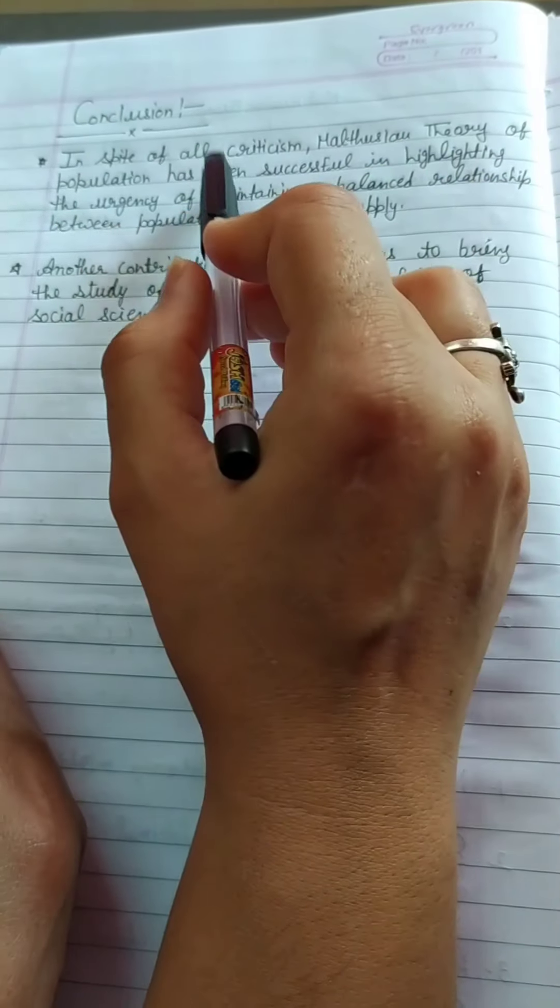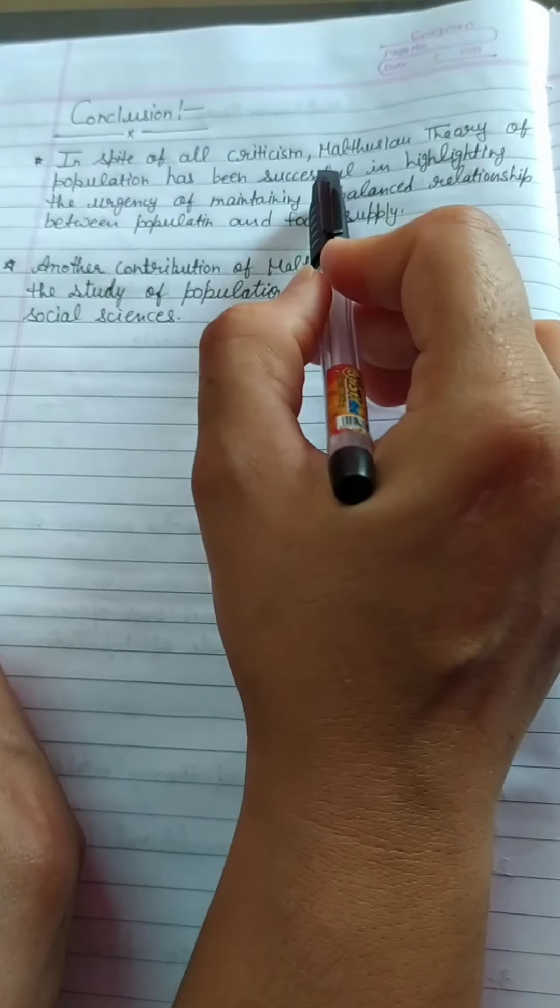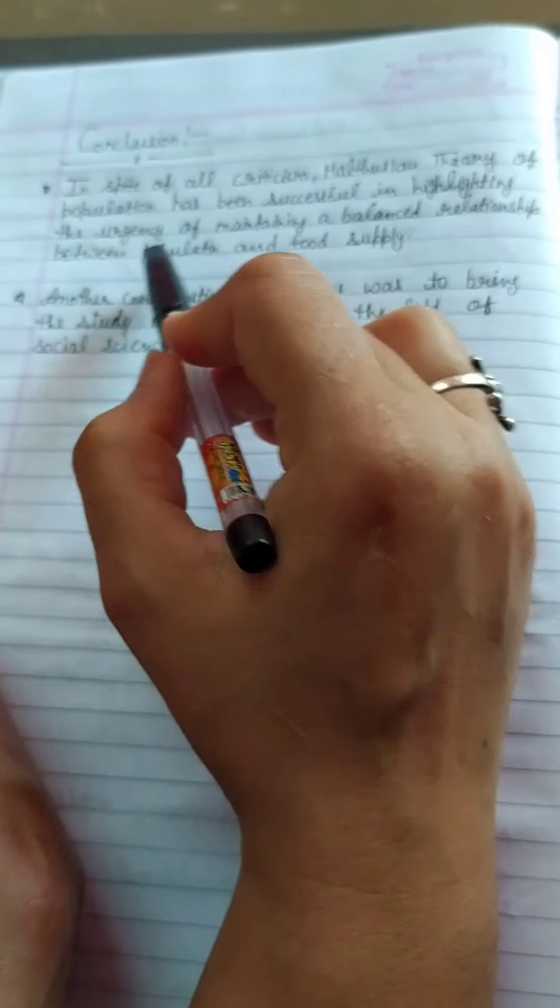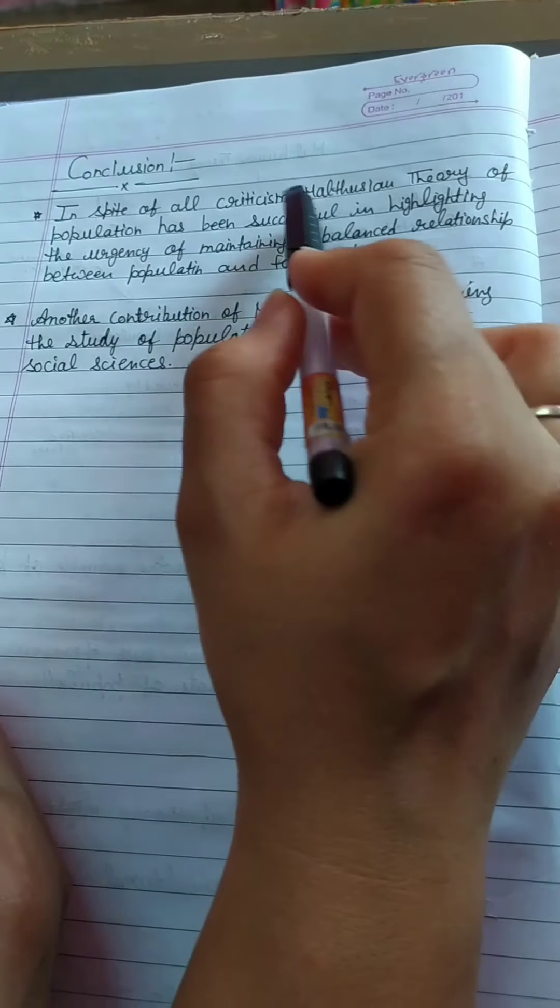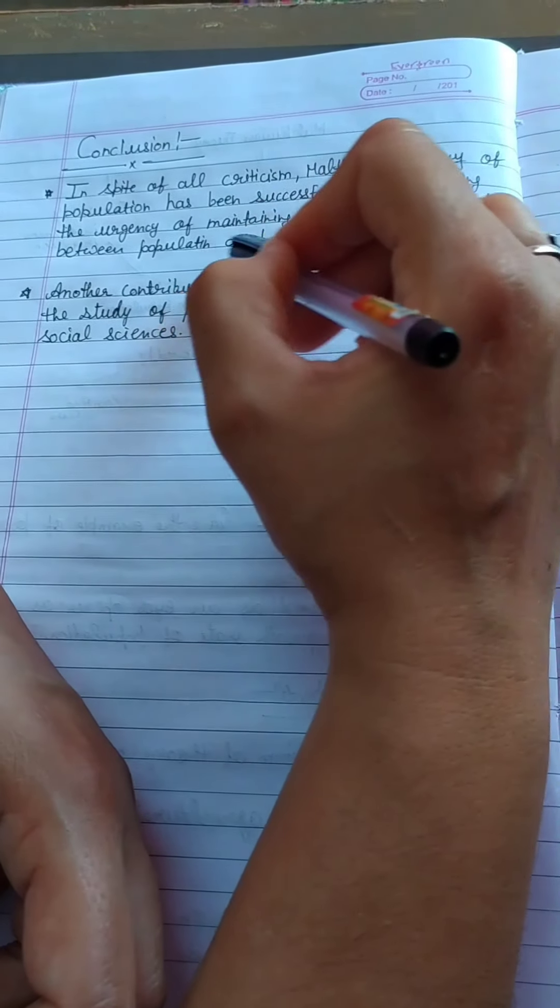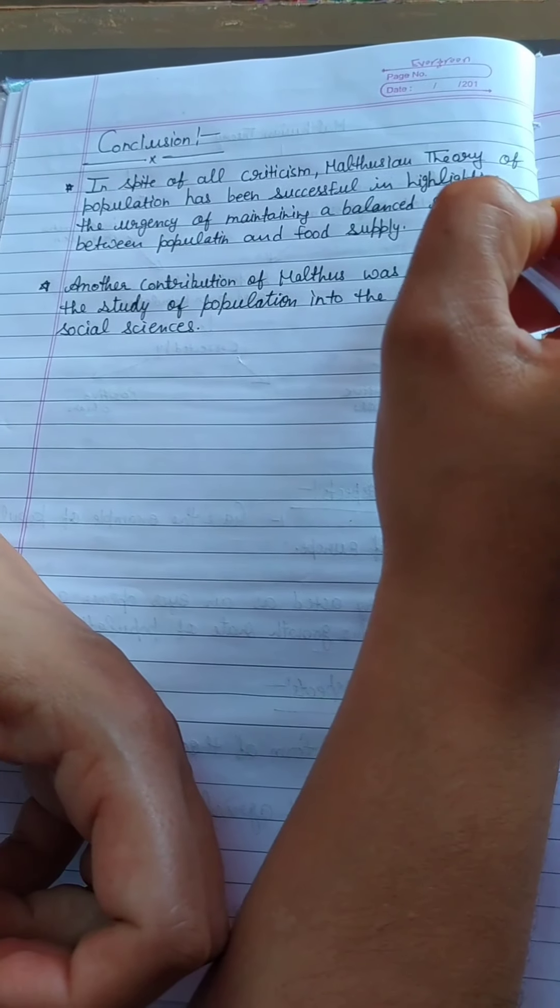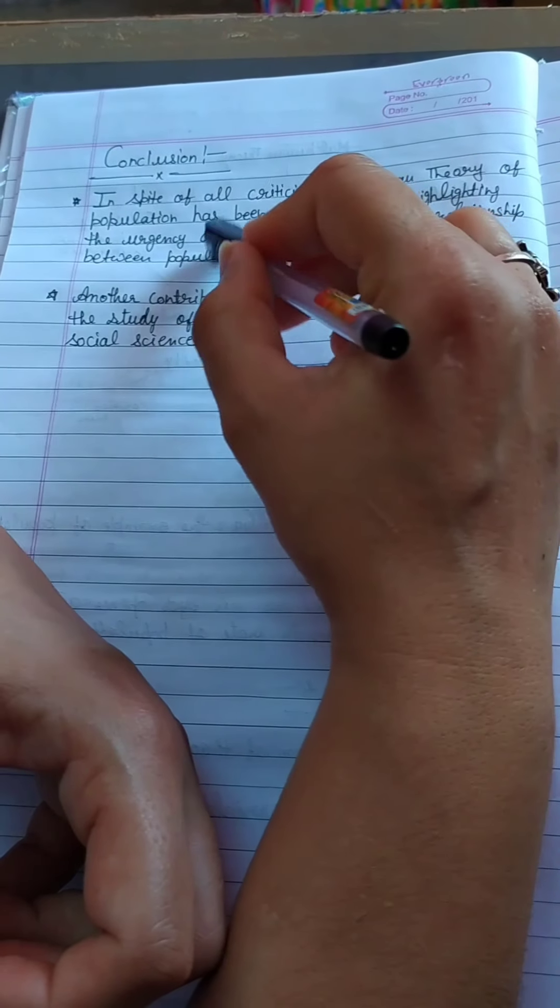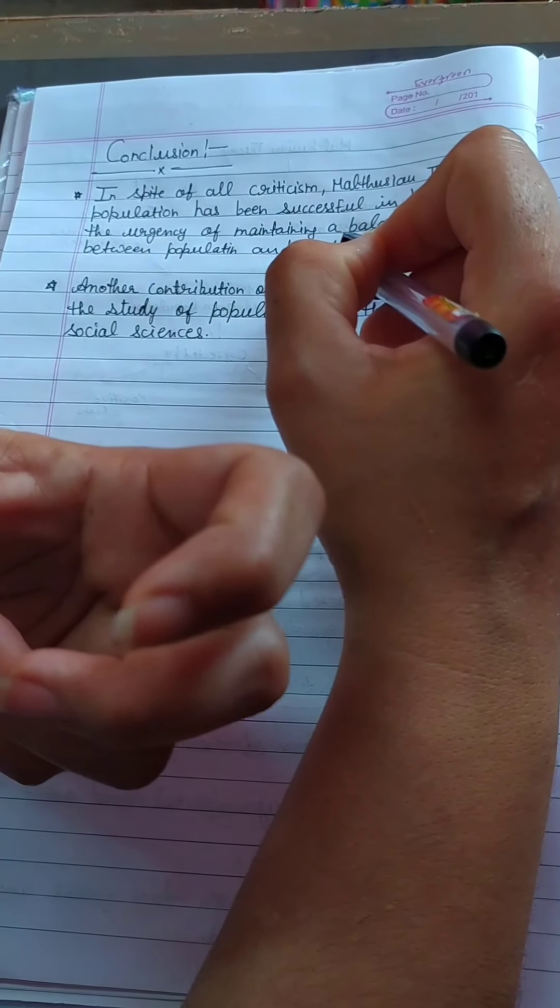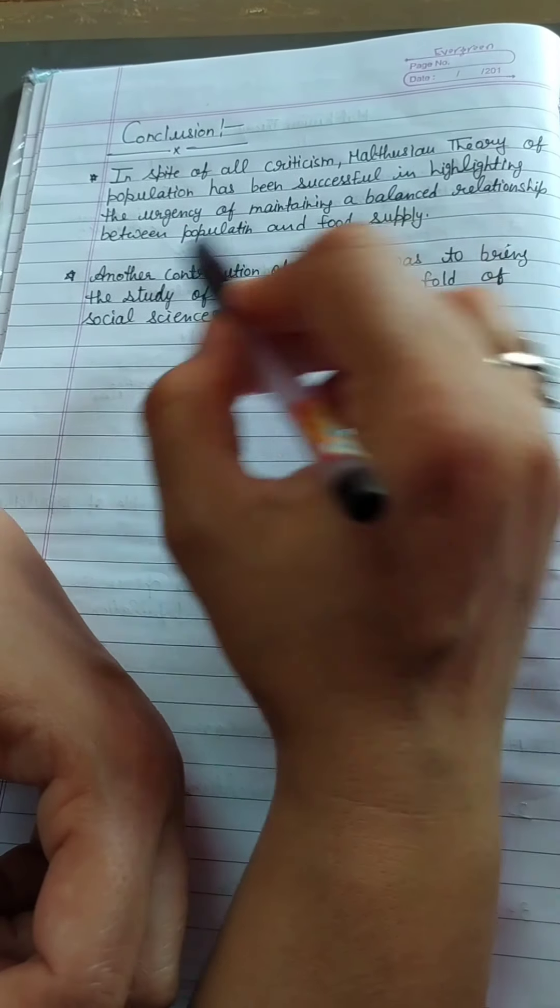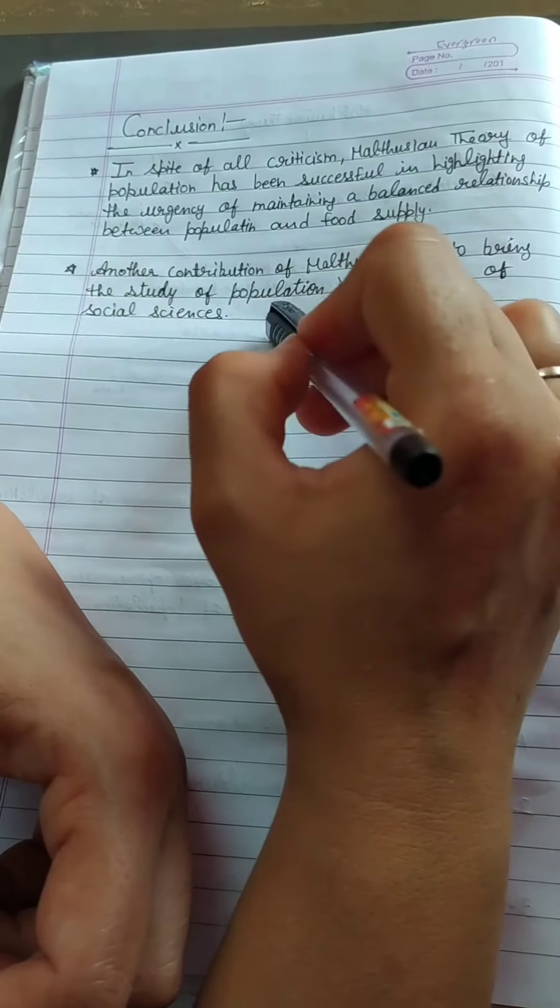Now conclusion. In spite of all criticism, Malthusian theory of population has succeeded in highlighting the urgency of maintaining a balanced relationship between population and food supply. Otherwise, humanity will face starvation and poverty. Second, another contribution of Malthus was to bring the study of population into the fold of social sciences.